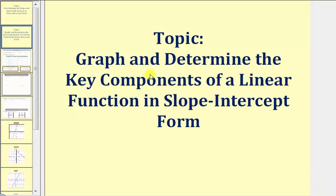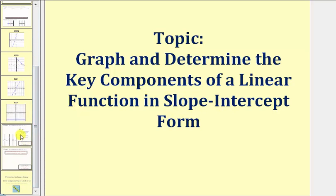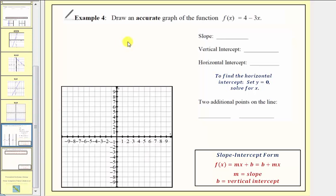Welcome to a lesson in which we'll graph and determine the key components of a linear function written in slope-intercept form. Here we're given the function f of x equals four minus three x. We're asked to determine the slope, vertical intercept, horizontal intercept, two additional points, and graph the function.